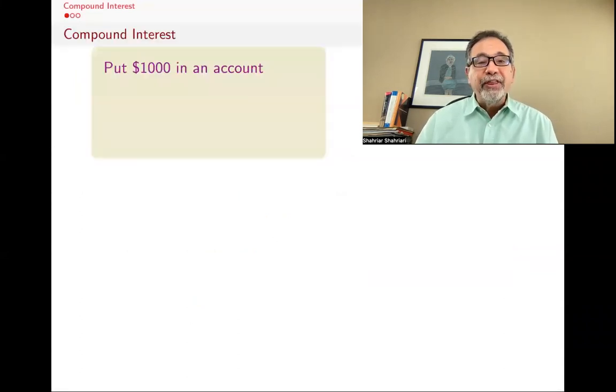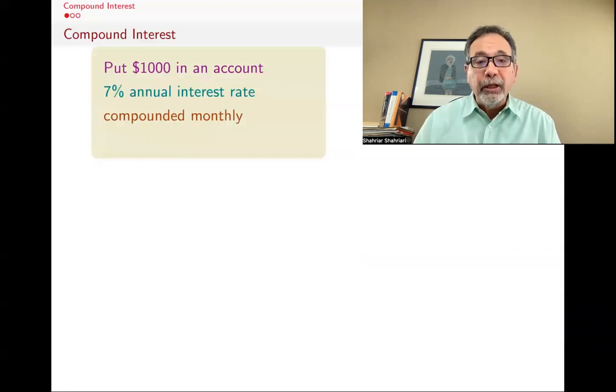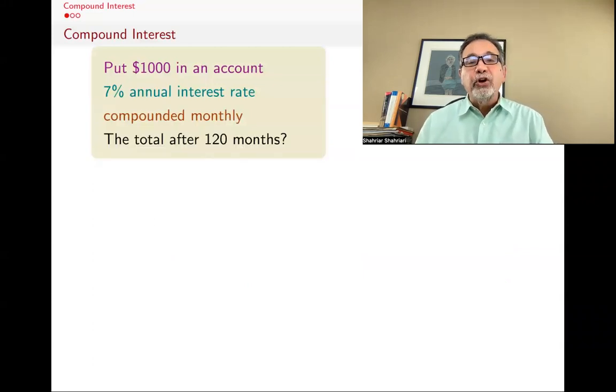Let's say you have $1,000 and you put it in an account, and you have a 7% annual interest rate compounded monthly. You want to know after 120 months, what will be the total amount.